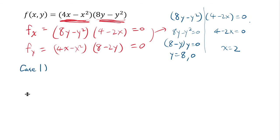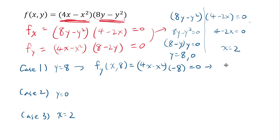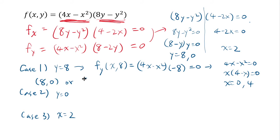Case 1: y = 8. Substituting into f_y: you get (4x − x²)(8·2 − 16) = (4x − x²)(−8) = 0. So 4x − x² = 0, which factors as x(4 − x) = 0, giving x = 0 or x = 4. So this first case gives two critical points: (0, 8) and (4, 8). Case 2: y = 0. Plugging into f_y gives 8 − 0 = 8, so again 4x − x² = 0, giving x = 0 or x = 4. That yields critical points (0, 0) and (4, 0).